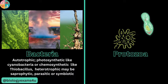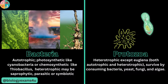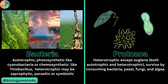Whereas protozoans, the mode of nutrition is heterotrophic. The exception is Euglena — they are photosynthetic with chloroplasts but are also heterotrophic. They can survive by consuming bacteria, yeast, fungi, and algae. They are actually predators.